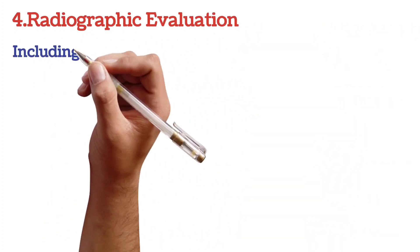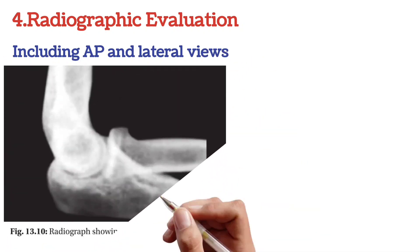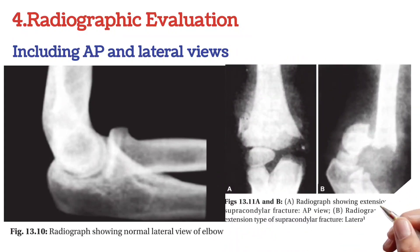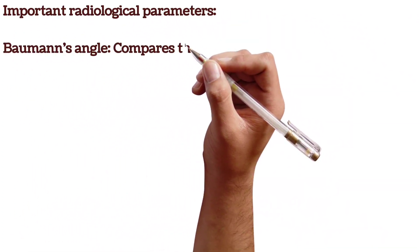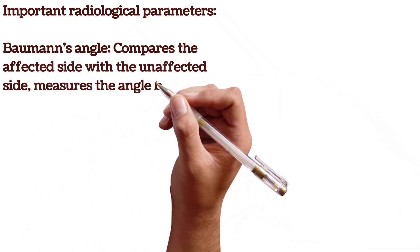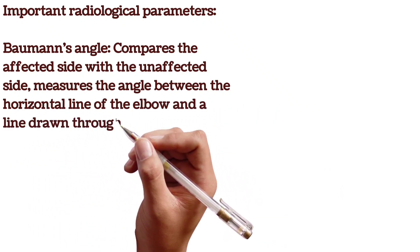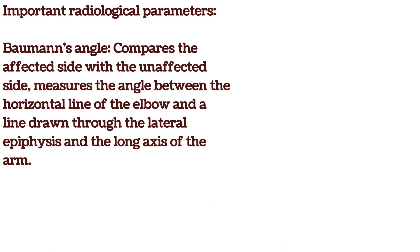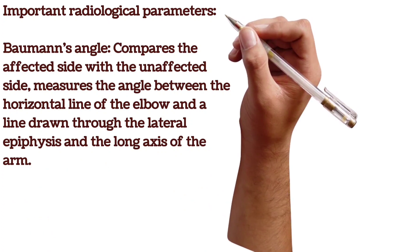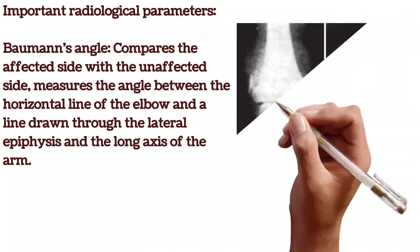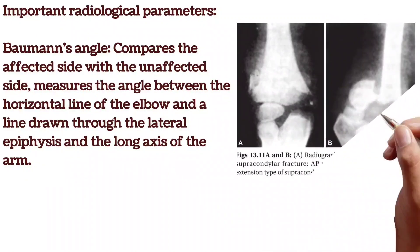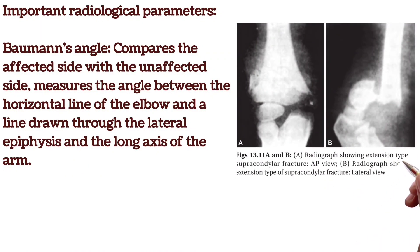Radiographic evaluation: X-ray of the elbow, including AP and lateral views, is crucial for assessing fracture anatomy and the adequacy of reduction. Important radiological parameters include Baumann's angle, which compares the affected side with the unaffected side and measures the angle between the horizontal line of the elbow and a line drawn through the lateral epiphysis and the long axis of the humerus. It indicates cubitus varus (less than 90 degrees) or cubitus valgus (greater than 90 degrees). Various signs such as the teardrop sign, anterior humeral line, coronoid line, fat pad sign, fishtail sign, and crescent sign help evaluate the fracture's characteristics.